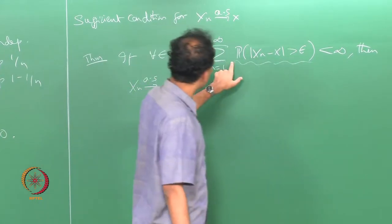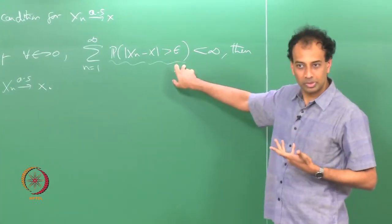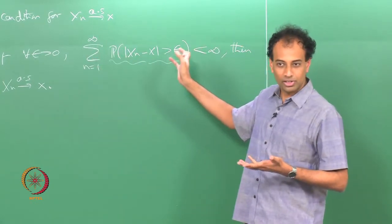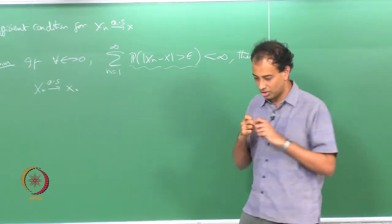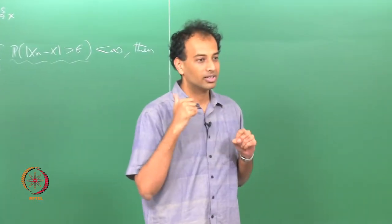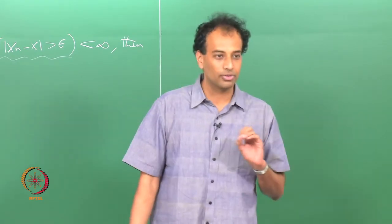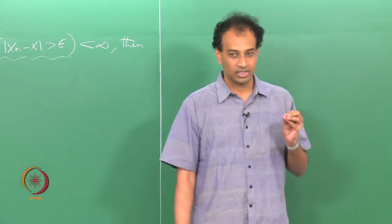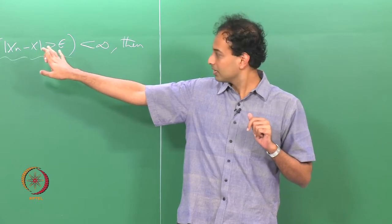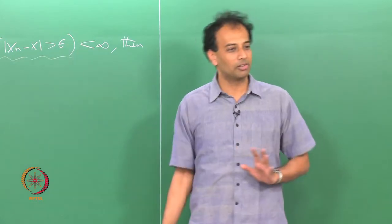For example, if this probability were to go to 0 as 1/n, you would have convergence in probability, but 1/n does not sum to any finite value — it is infinite. So if this term goes to 0 not just as n tends to infinity but fast enough to keep the summation finite, then you have convergence almost surely. This is only a sufficient condition — if this holds you are guaranteed almost sure convergence, but even if it does not hold, sometimes you may still have almost sure convergence.